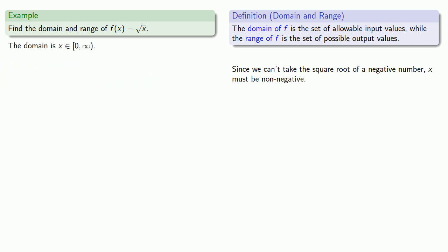Meanwhile the range consists of our possibilities. What could we get as the principal square root of x? Since the principal square root of x is always non-negative, f(x) must be non-negative. And so our range is also going to be from zero included all the way to infinity.